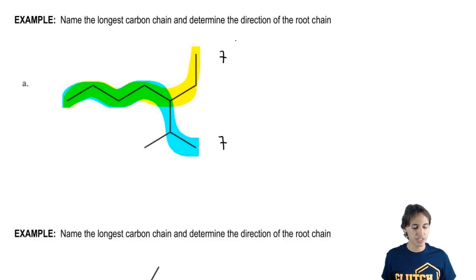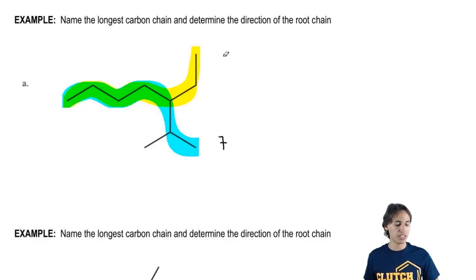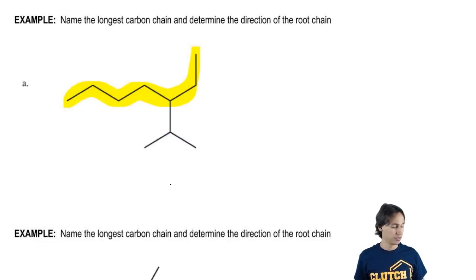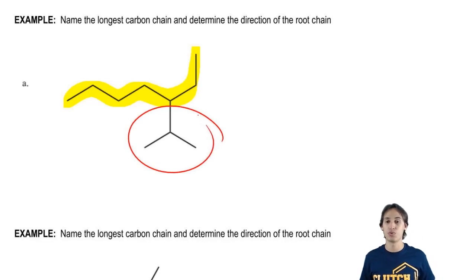So what I want to do is I want to erase one and we're going to see how many substituents each one gives. So if I have the yellow chain, how many substituents do I have total? I have just one substituent. Remember that a substituent just means a branch. So I just have one thing that's not on the yellow. Does that make sense? One thing branching off, so I would call that one.